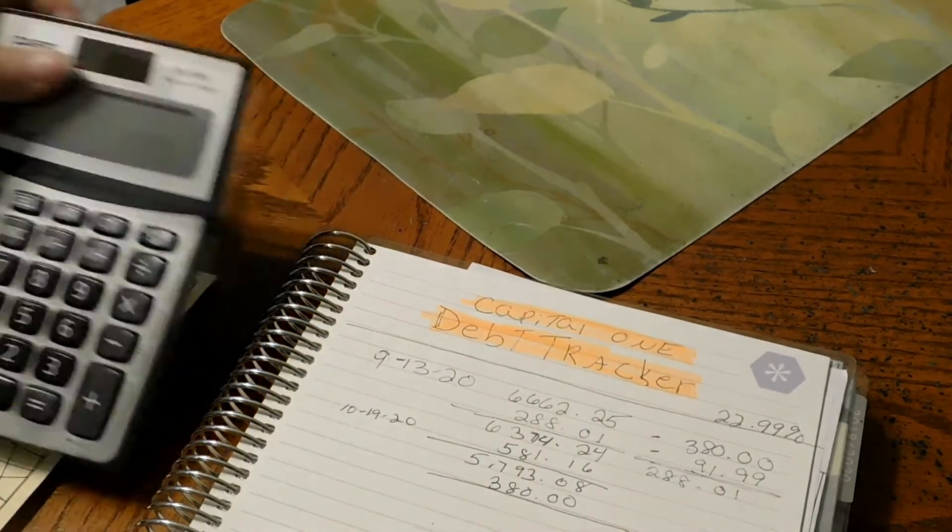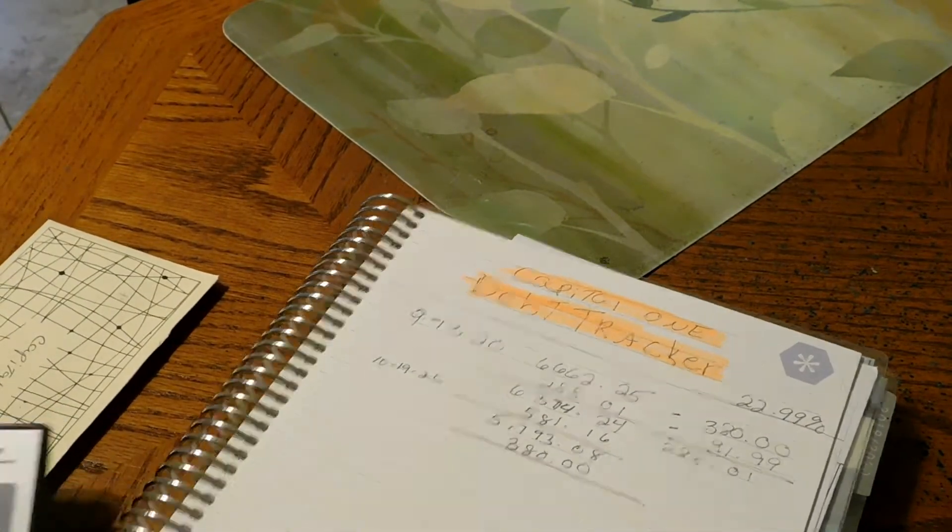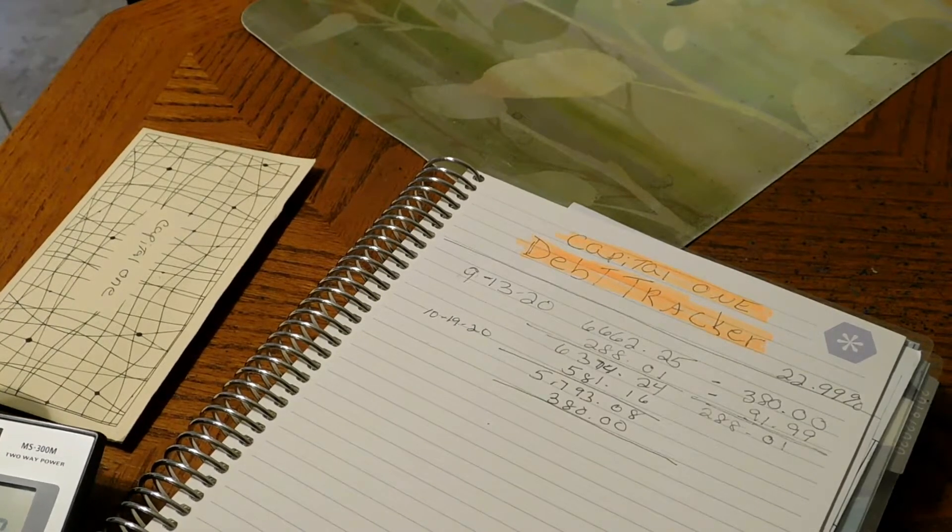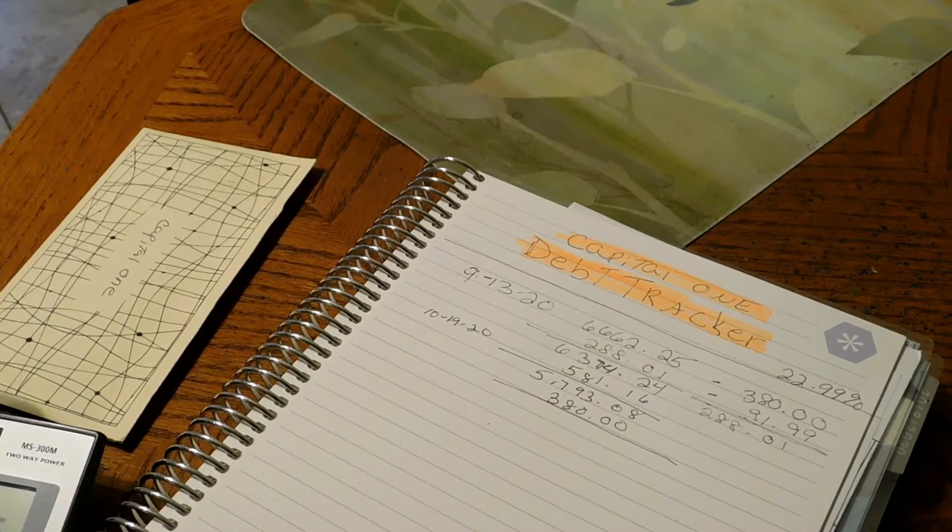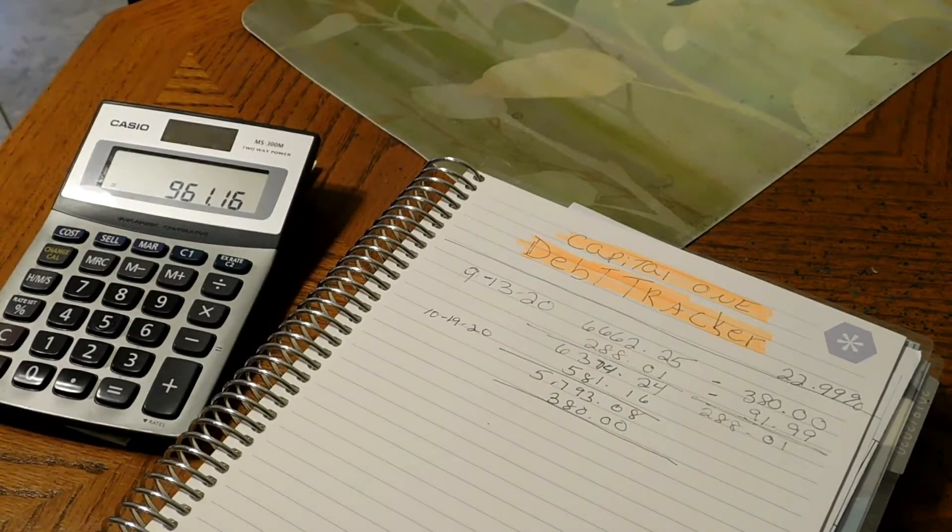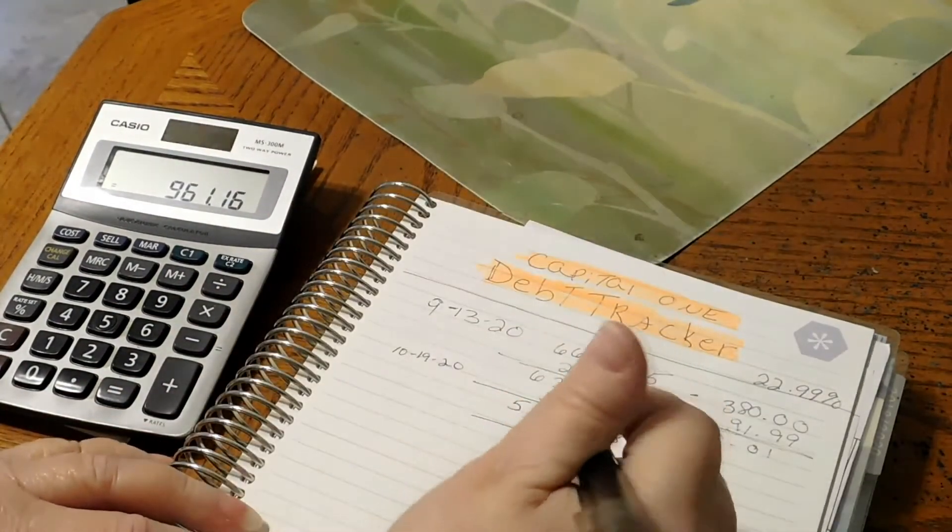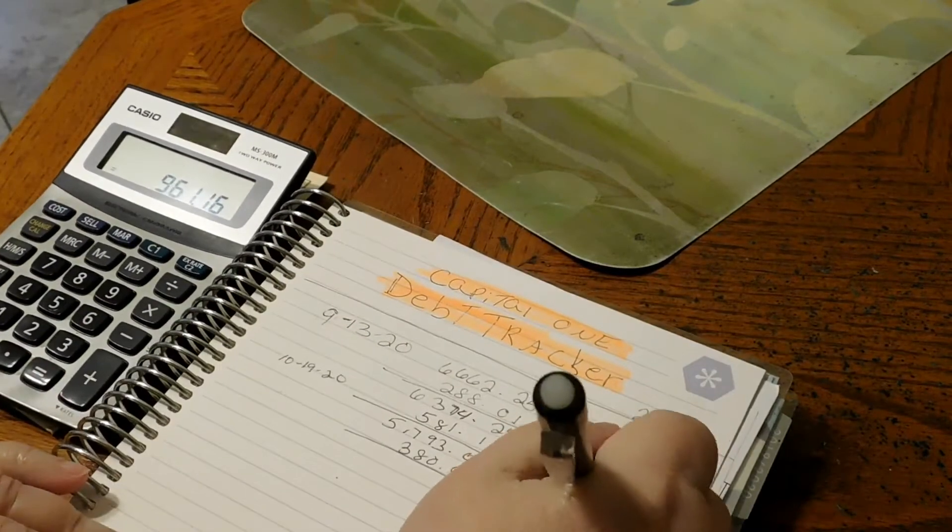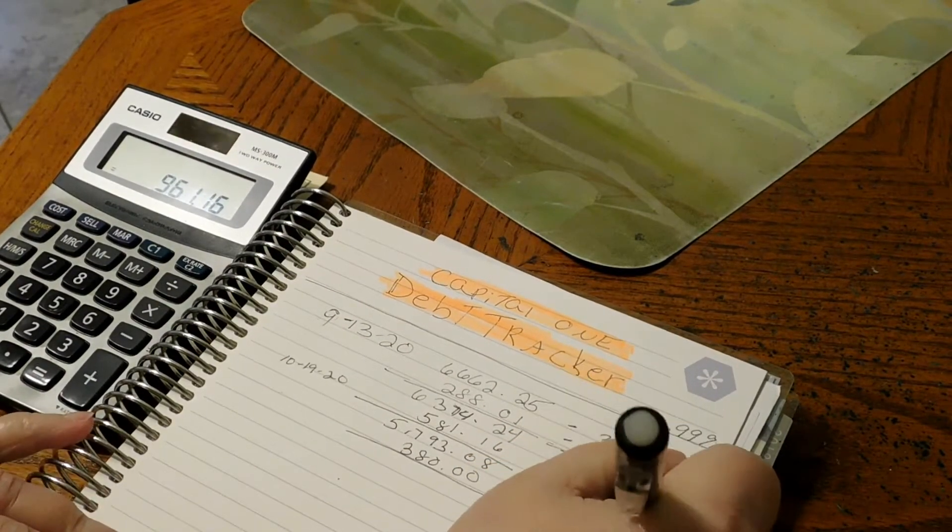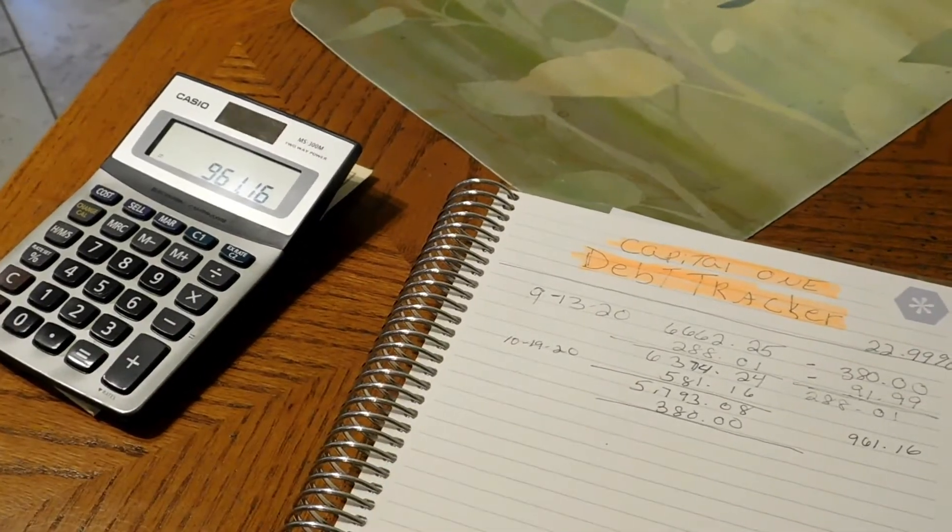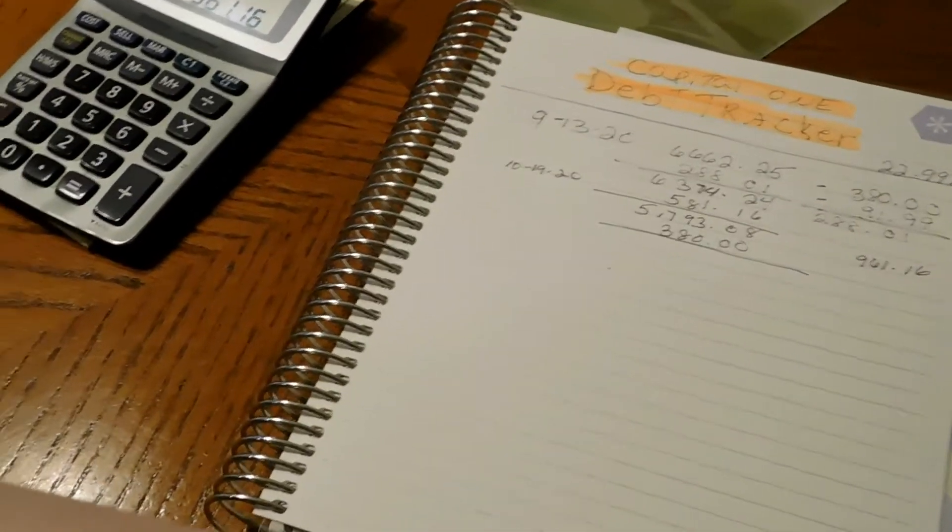So in the month of October, with $581.16 plus $380, we paid $961.16 for the month of October. I'm gonna write $961.16. I'll move down just a tiny bit more. I apologize if it's the wrong angle, my tripod broke.